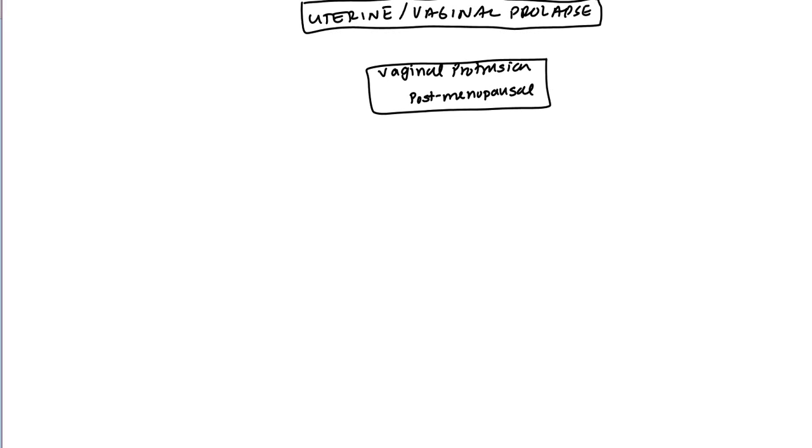So these are the symptoms that are common to all the different types of prolapses. From here, depending on extra symptoms that they may have, you will have other types. One that you would maybe get is if they have urinary related symptoms. If there's urinary retention or incontinence, then what you would be thinking is going to be a cystocele.